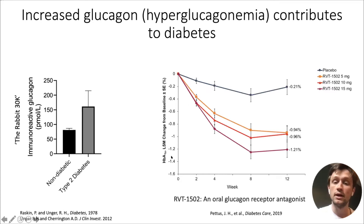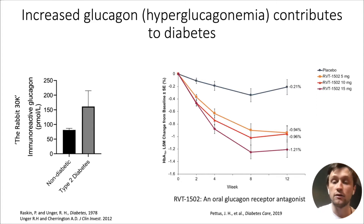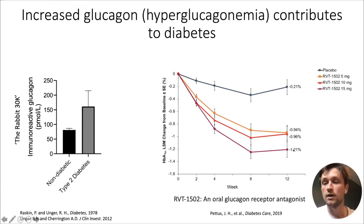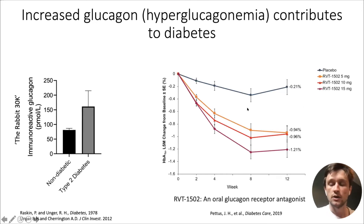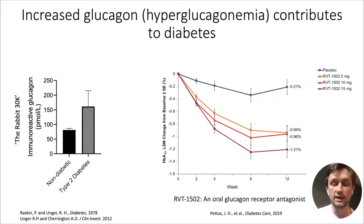As you can see here, the glycated hemoglobin — a surrogate marker of glucose — is significantly reduced dose-dependently. This is just one of many glucagon receptor antagonists. Just to mention, glucagon agonism is also extremely hot from many perspectives, not only fatty liver disease, so I think we should keep our eyes open for that.